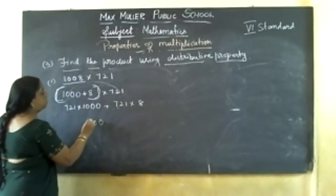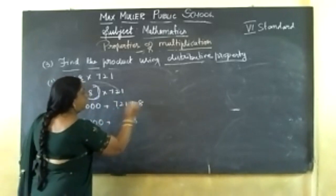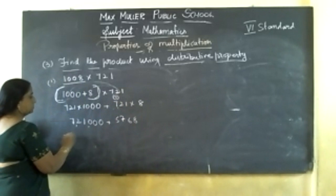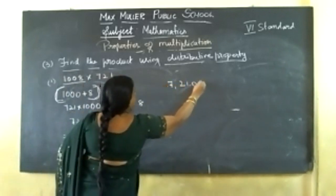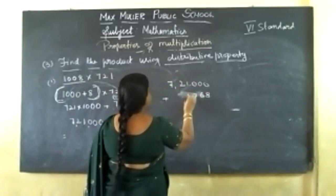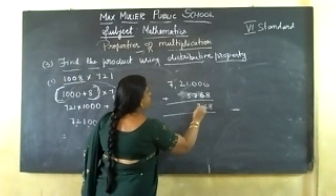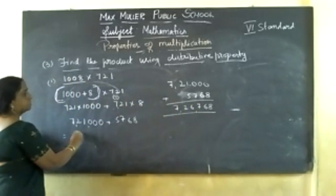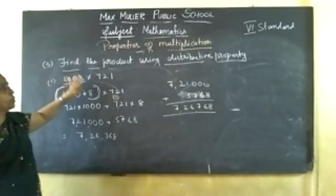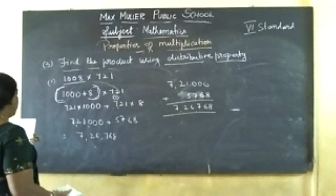721 into 8: 8 ones are 8, 8 twos are 16 (1 carry), 8 sevens are 56, plus 1 is 57. So plus 5,768. Now add: 721,000 plus 5,768. Arranging is important — if not arranged properly you won't get the correct answer. The answer is 726,768. How to distribute: distributive property of multiplication over addition.